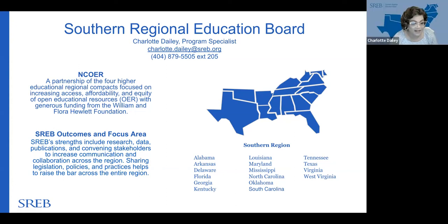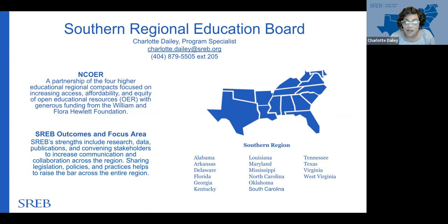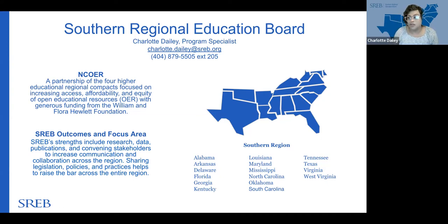I am going to explain the partnership called the National Consortium of Open Educational Resources. It's a partnership of four higher education regional compacts: the Midwestern Higher Education Compact, SREB (the Southern Regional Education Board), NEBHE (the New England Board of Higher Education), and WICHE (the Western Interstate Commission on Higher Education). Our presidents all signed an agreement to work collaboratively on a grant with generous funding from the William and Flora Hewlett Foundation, each with different focus areas to advance and increase awareness and adoption of OER across the nation.